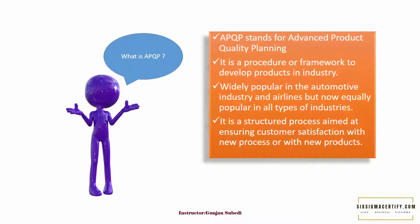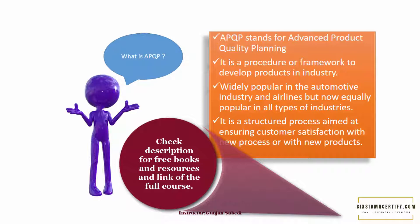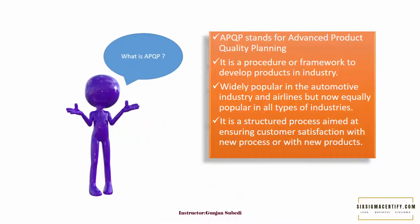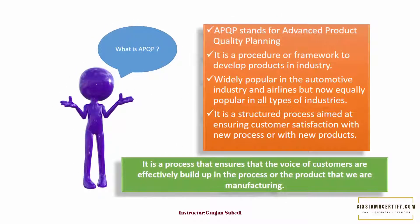What is Advanced Product Quality Planning or APQP? It is a procedure or a framework to develop products in the industry. Basically, it is widely popular in the automotive industry and airlines, and then later other industries too started understanding the importance of APQP and started using the concepts in their workplace. It is a structured process aimed at ensuring customer satisfaction with new processes or new products. We can say that it is a process that ensures that the voice of customers is effectively built up in the process or the product that we are manufacturing.